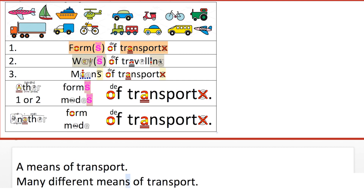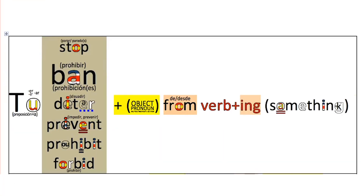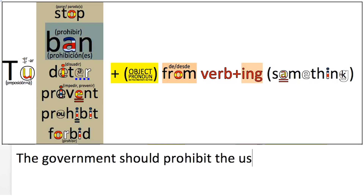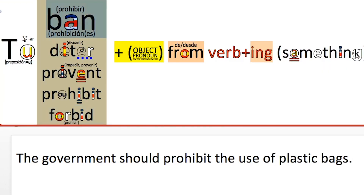You can have 'a means of transport' or 'many different means of transport'. You can see that the S is always there — it doesn't matter if it's singular or plural. And again, transport never has an S. Another thing you might want to talk about is banning, prohibiting, or forbidding — all of these are different ways of saying prohibit. For example: the government should prohibit the use of plastic bags, or the government should ban the use of plastic bags.